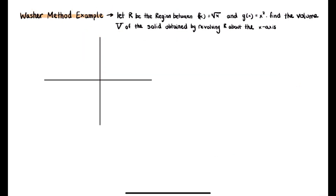Let's look at a washer method example. Let R be the region between f of x equals square root of x and g of x equals x squared, and find the volume v of the solid obtained by revolving R around the x-axis. The best way to approach these problems is to draw them out. f of x is square root of x and x squared looks like that parabola. To find where they meet, we set them equal — x squared equals square root of x — which gives x equals 0 and x equals 1.